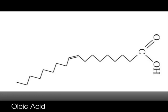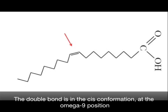Oleic acid is a monounsaturated 18 carbon fatty acid with one double bond. The double bond is in the cis conformation at the omega-9 position.